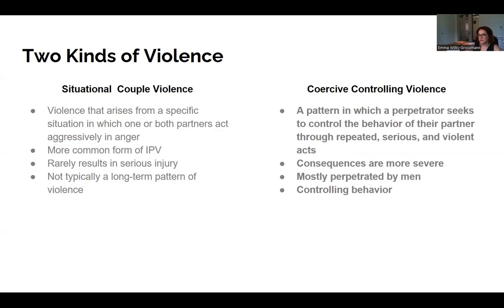The other type of violence is coercive controlling violence. Within coercive controlling violence, there's a pattern in which the perpetrator seeks to control their partner's behavior through repeated, serious, violent acts. This type of violence is less common but has more serious consequences. The main goal is to gain control — unlike situational couple violence, which is more of a lash-out in anger, coercive controlling violence involves specific goals of controlling their partner through any means necessary.